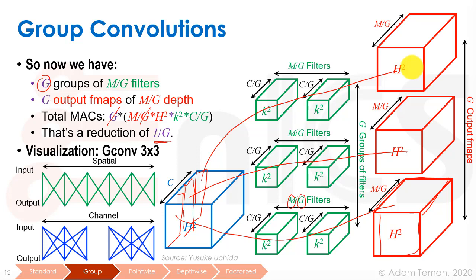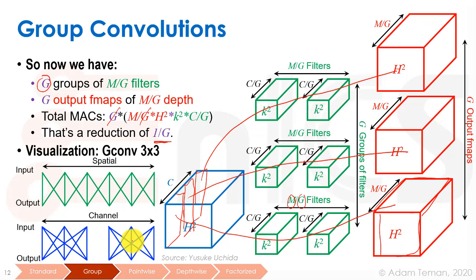Looking at the spatial and channel visualization for group convolutions, the spatial visualization is the same — we still have the same local connectivity between inputs and outputs. But within channels, we only maintain connectivity per group; there is no connection between one group and the next. This reduces the complexity a lot.